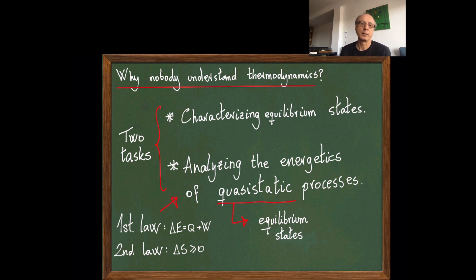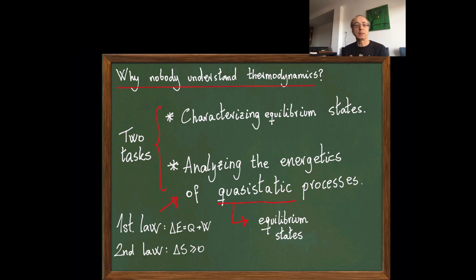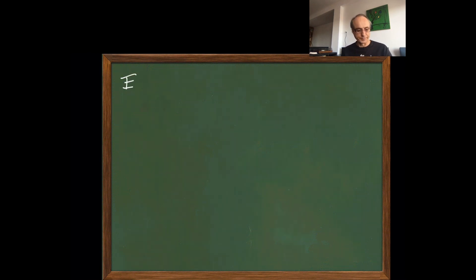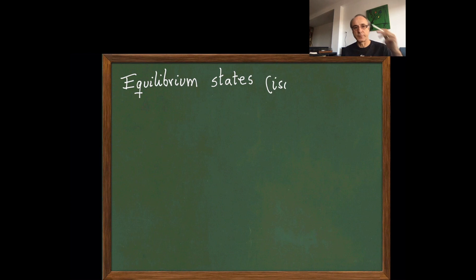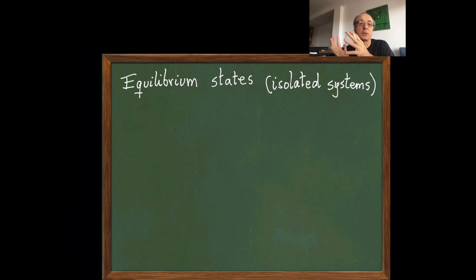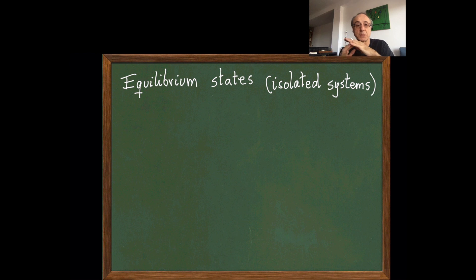One of the basic assumptions of thermodynamics is the existence of equilibrium states, which means that if you have an isolated system and let it evolve, it will reach some state. We call it equilibrium because the macroscopic variables of this state don't change in time. There is also a fundamental question of what is a macroscopic variable—whether it is possible to define macroscopic variables in an objective way, or if it is just a question of our technology or viewpoint. We will just assume that there are equilibrium states for isolated systems.